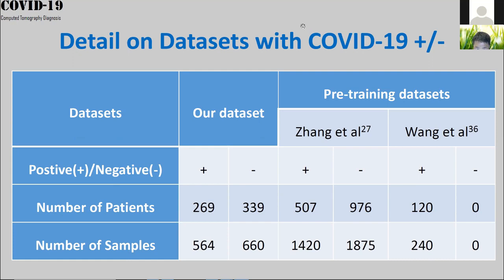Regarding related work from other researchers: on MedRxiv and BioRxiv, many papers are posted every day from groups using X-ray or CT scans for AI-based COVID-19 diagnosis. We are not the only group in the world — there are many others conducting similar research. However, we believe we are among the first groups using lesion attention information in this way.